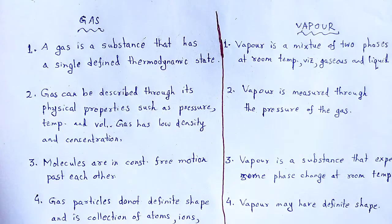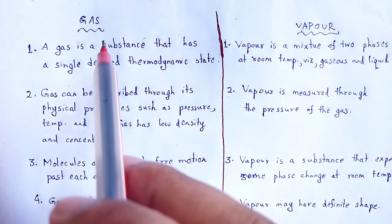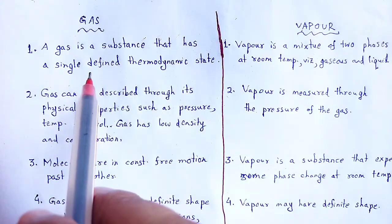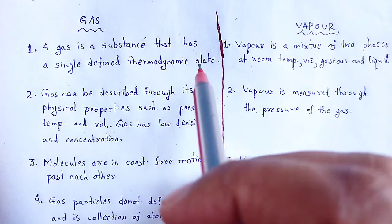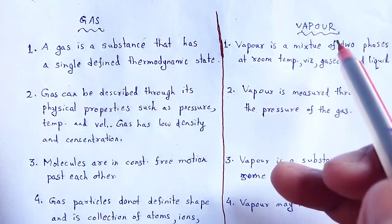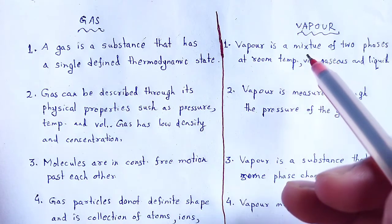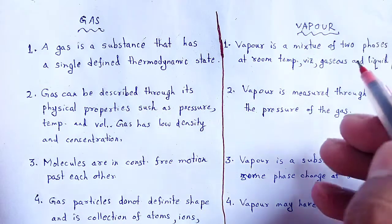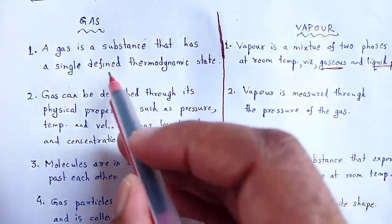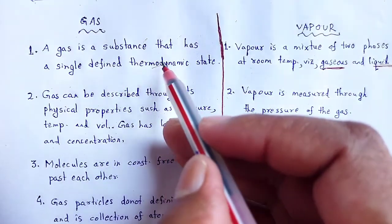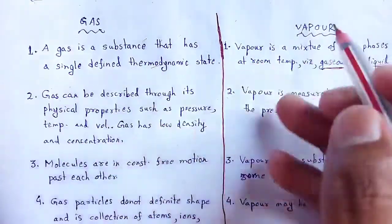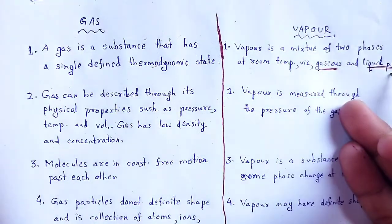First point: Gas is a substance that has a single defined thermodynamic state. But in the case of vapour, it is a mixture of two phases at room temperature — that is, a mixture of gaseous and liquid phase. So gas has a single defined thermodynamic state, whereas vapour is a combination of both gaseous and liquid states.